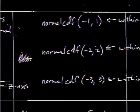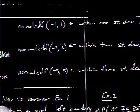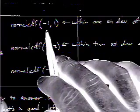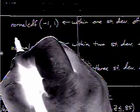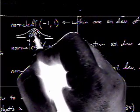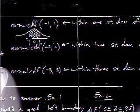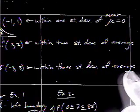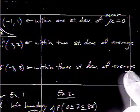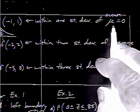So let's understand something. If you do a normal CDF from negative 1 to positive 1, right? So in terms of the graph, 0 being in the middle, negative 1 being on the left, 1 being on the right, we're looking for all of this area right here. That is within one standard deviation of the mean, which is mu equaling 0, within one standard deviation of the average.